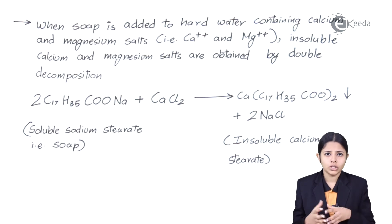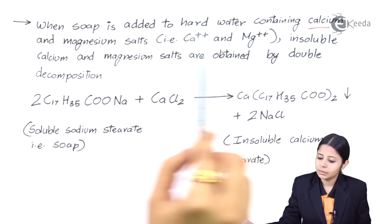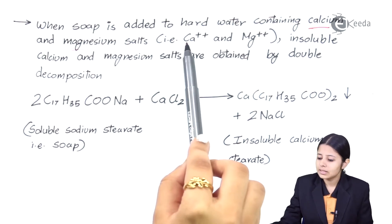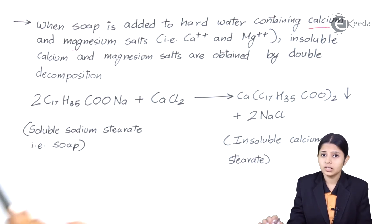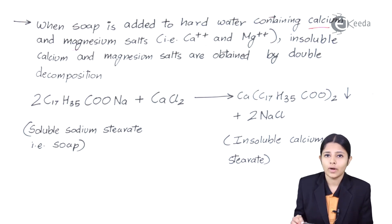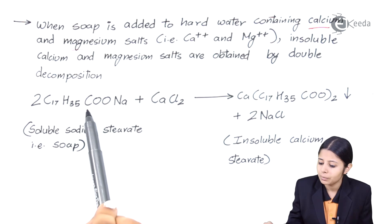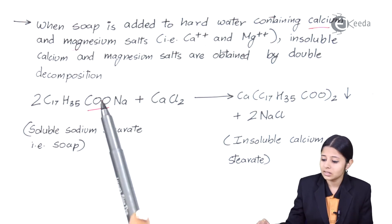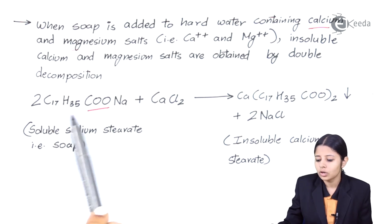Let us now see the reactions of soap with water. When soap is added to hard water containing calcium and magnesium salts, insoluble calcium and magnesium salts are obtained by double decomposition reaction. Soap is soluble sodium stearate — a sodium salt of a fatty acid. The functional group of a fatty acid is C=O; for a normal carboxylic acid it is C=OH, but since this is a sodium salt, instead of H we have sodium: C=O-Na.